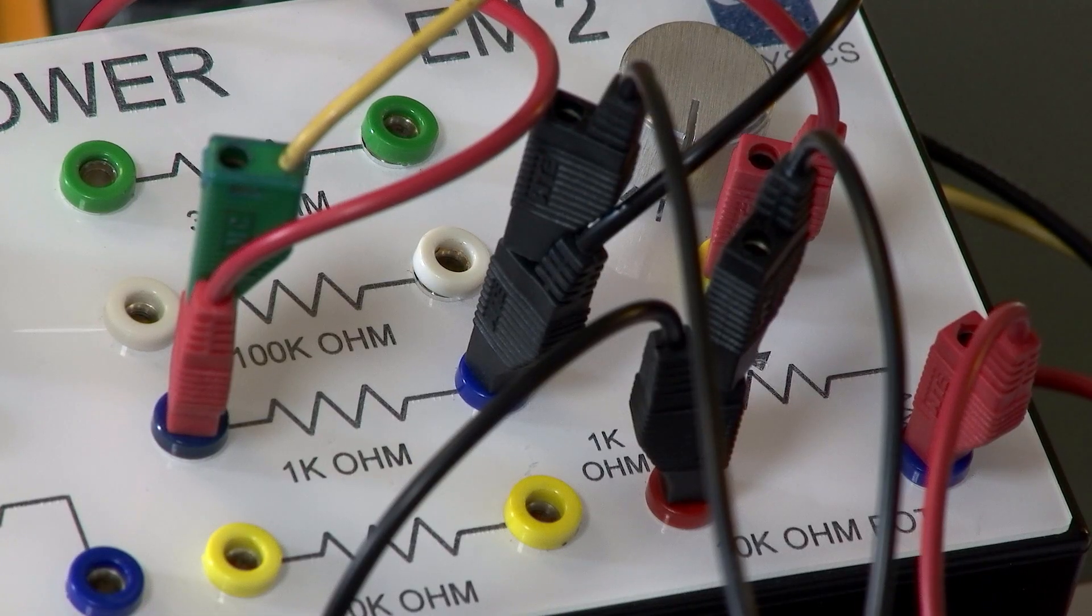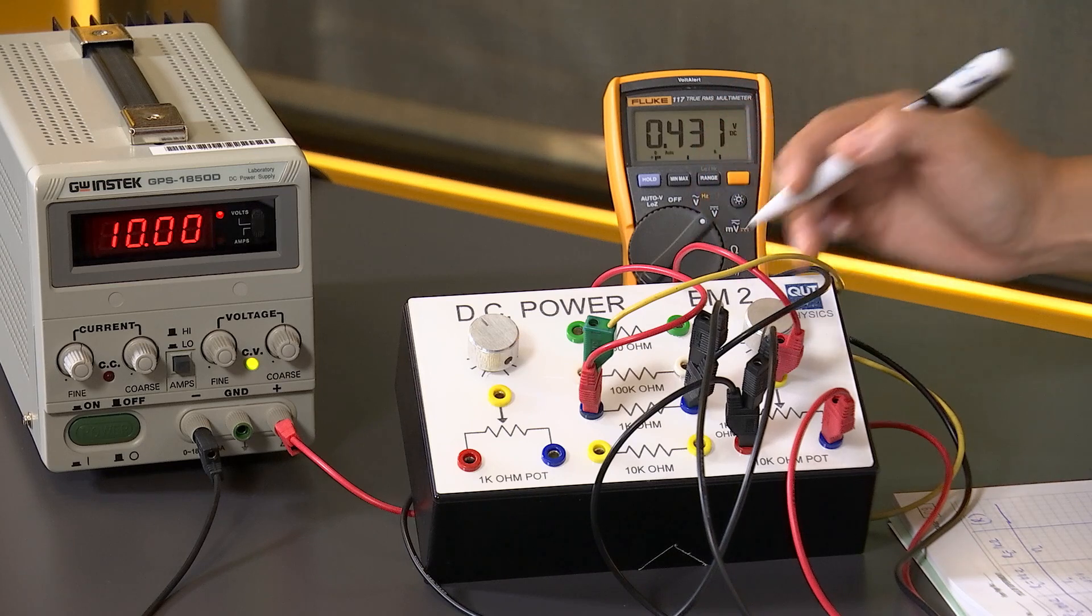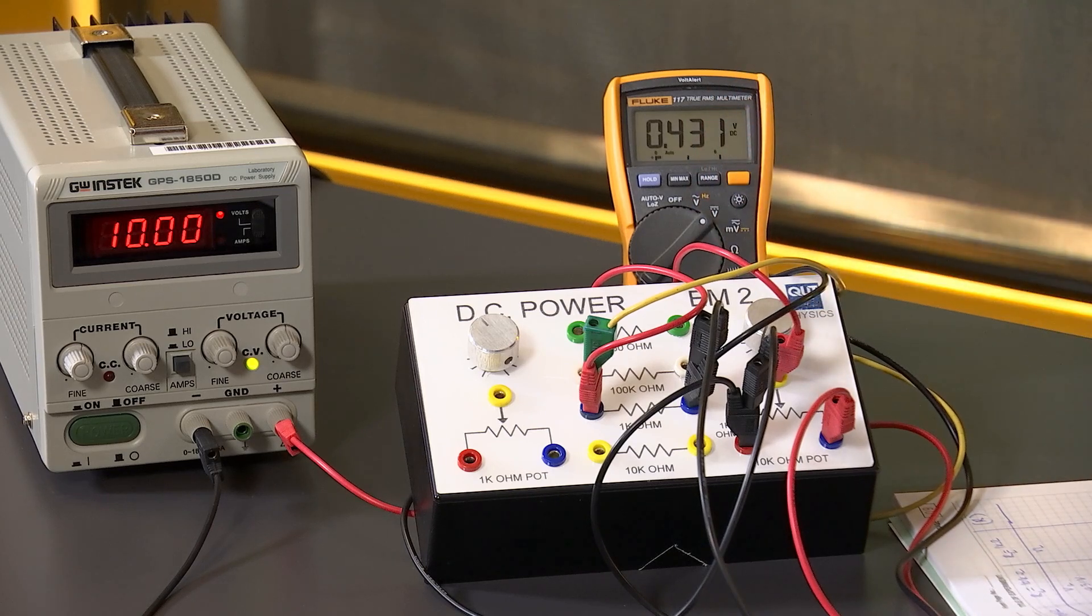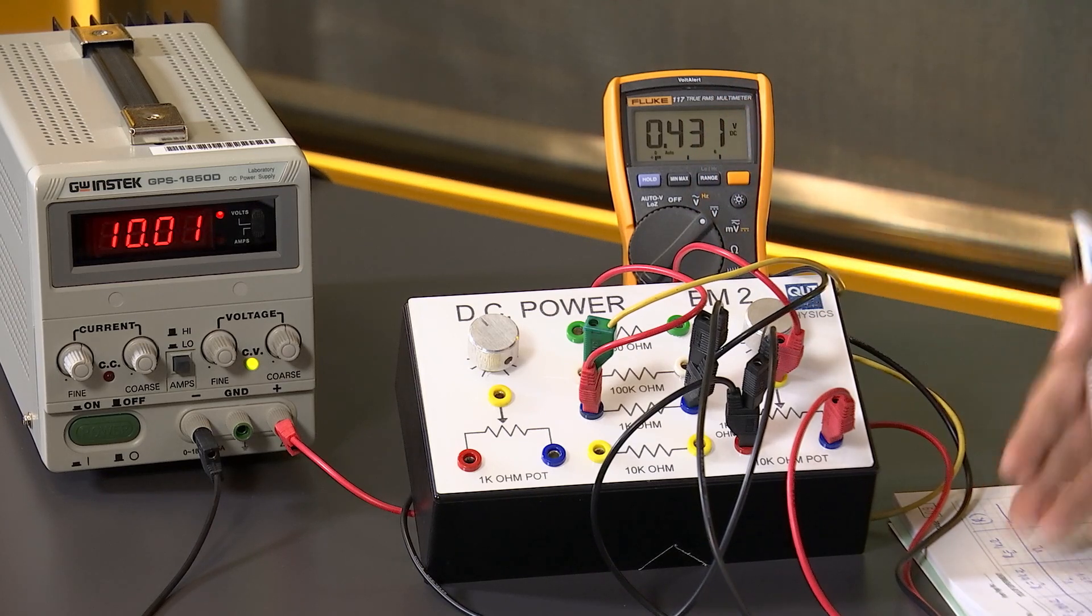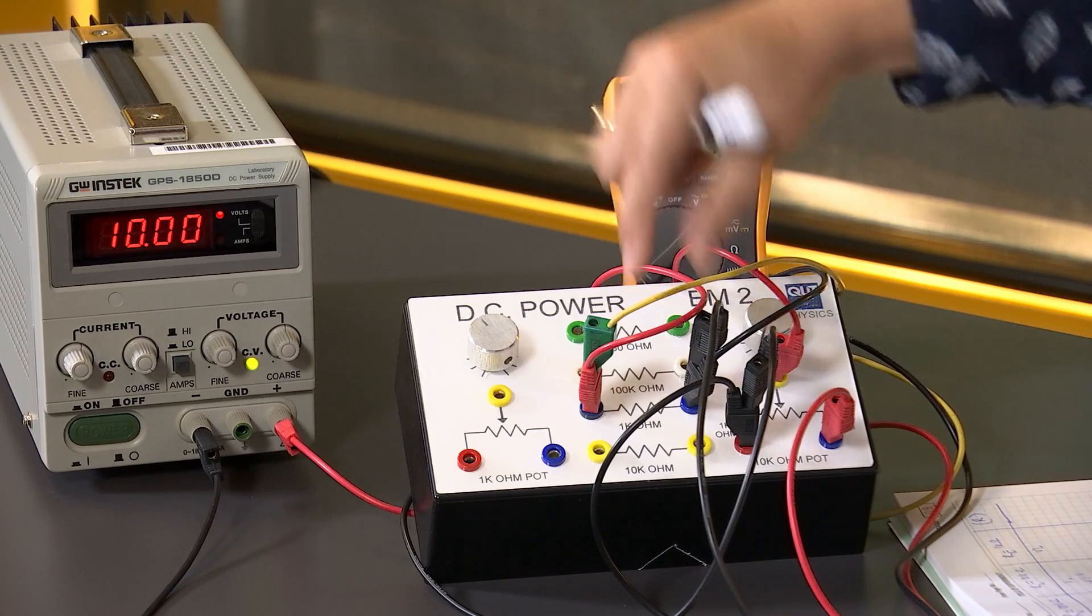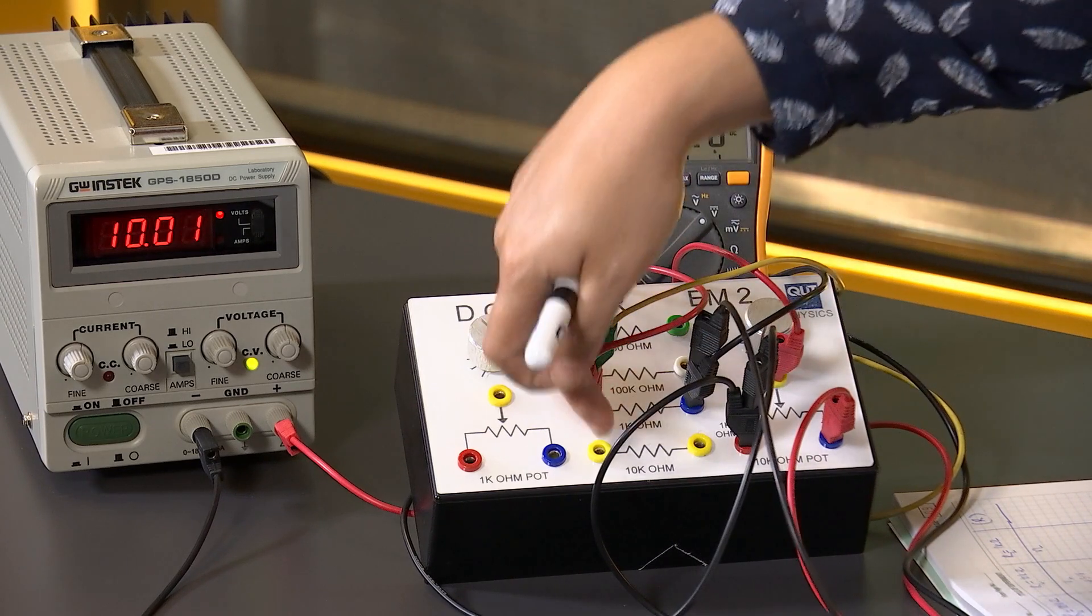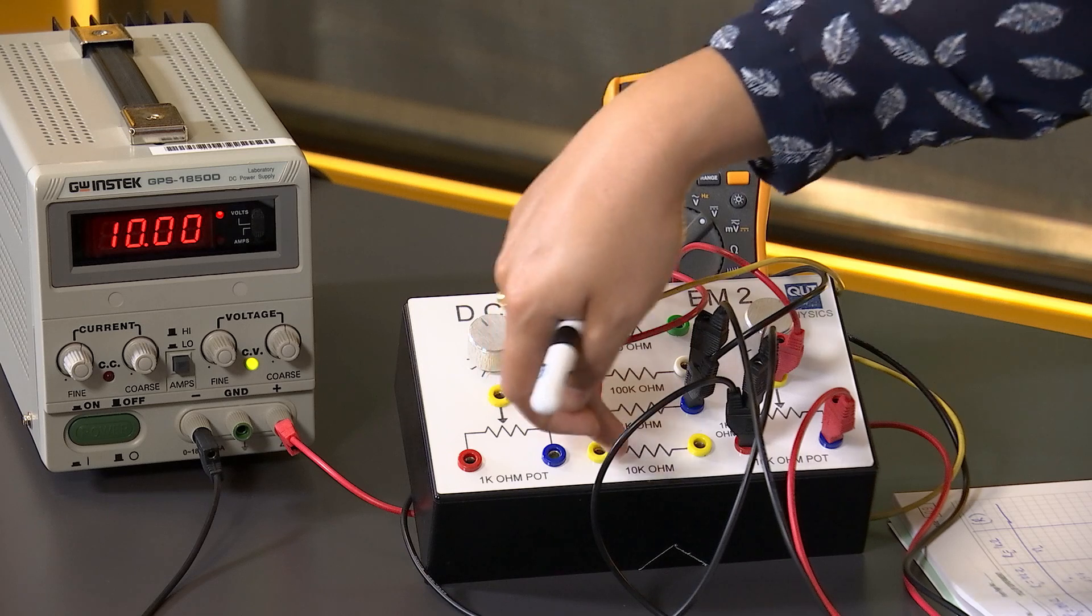Then we do it for all the markings in the potential divider and complete our column. And then we move to the third set of readings, which we measure for the load resistance across 10 kilo ohms.